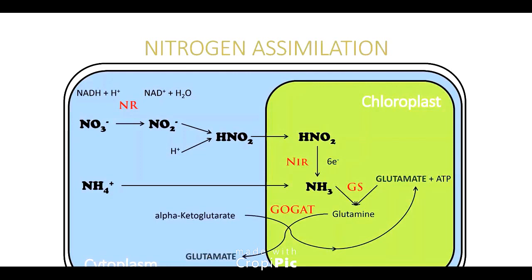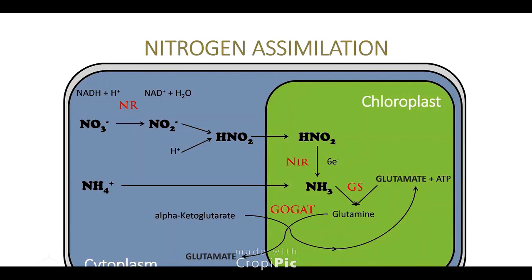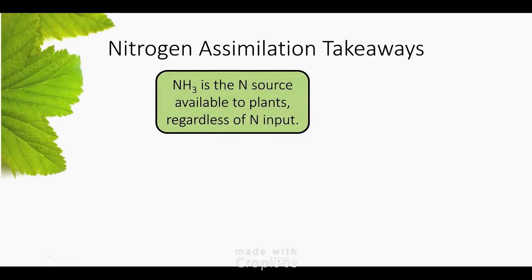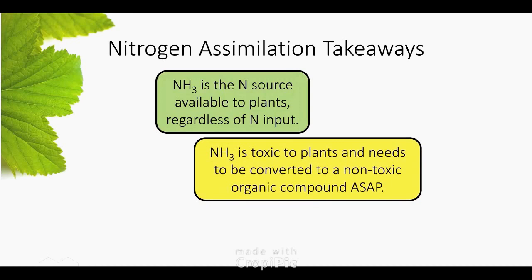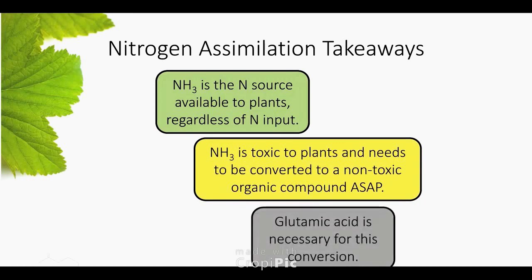The plant has ways where it can cycle the glutamic acid to the cytoplasm and then back into the chloroplast as it needs it. There are always these ways and enzymes the plant is able to use and produce to allow the plant to get the amino acid where it needs to be, but it has to be there. So takeaways: ammonia is the nitrogen source available to the plants regardless of what input you use — nitrate, ammonium, or urea — it all turns into ammonia in the chloroplast. Ammonia is toxic, and we have to put a carbon to it as soon as possible, and glutamic acid is necessary for this conversion.